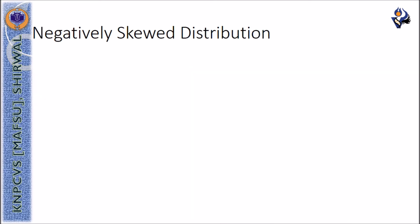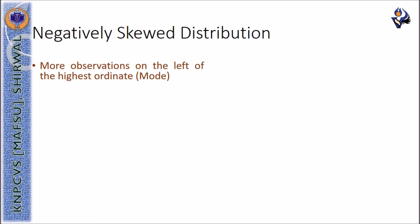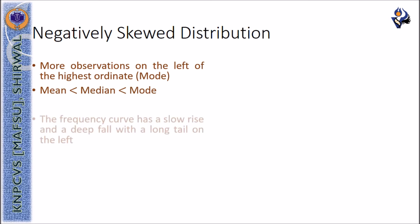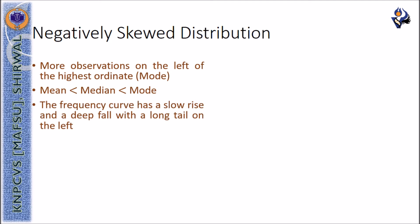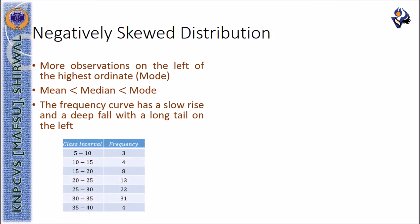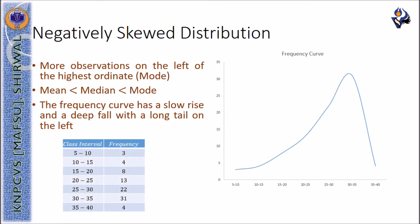In a negatively skewed distribution, we observe more observations on the left side of the highest ordinate. Here, the mean will be smaller than the median and the mode. The frequency curve has a slow rise and a steep fall with a long tail on its left. For example, the given data produces a typical negatively skewed distribution where the arithmetic mean is smaller compared to the median and the mode.